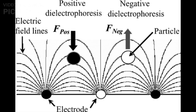If the particle moves in the direction of increasing electric field, the behavior is referred to as positive dielectrophoresis; if acting to move the particle away from high field regions, it is known as negative dielectrophoresis. Here, the force vectors acting on the polarized particle are shown as positive on the left and negative on the right side.